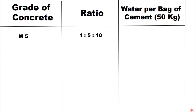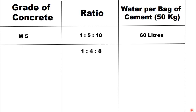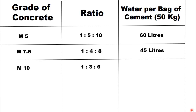The water requirement for 50 kilograms of cement for M5 grade concrete is 60 liters. For M7.5 grade concrete, the water requirement for 50 kilograms of cement is 45 liters. For M10 grade of concrete, the water requirement is 34 liters per bag of cement.